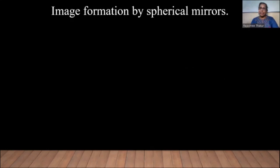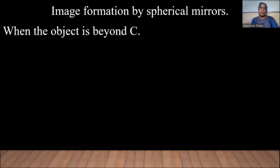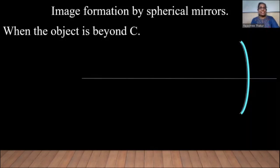Image formation by spherical mirrors. Let us understand different cases — let us take different positions of object and, using ray diagrams, find the image positions. Let us consider the object to be beyond C. So let us consider this concave mirror. This is the principal axis, the pole of the mirror, the focus, and the center of curvature which we denote by C. Let us consider an object beyond C — the object can be anywhere beyond C.